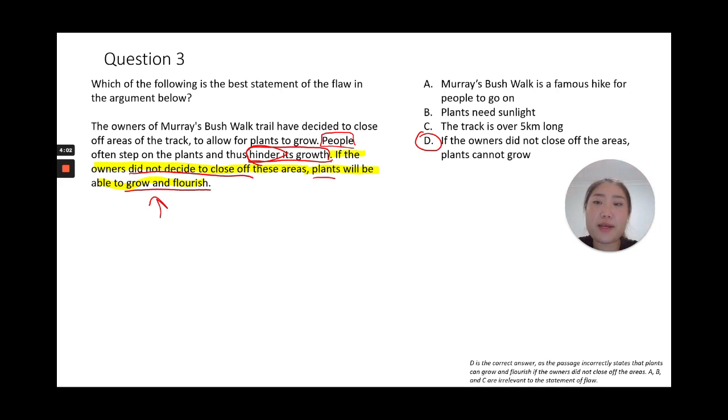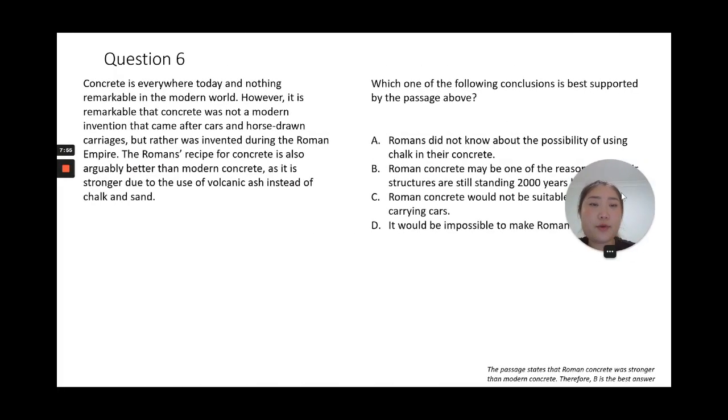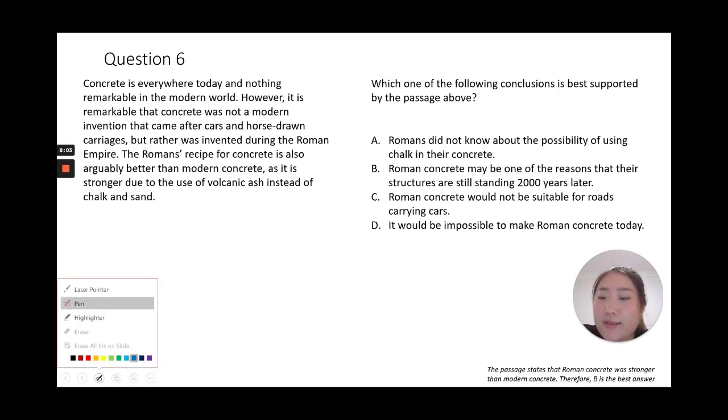Question six: which is the best supported conclusion? Where is the conclusion? Remember what I say, we want to try and look at the beginning or the end. In this case, the end is where the conclusion lies: Roman's recipe for concrete is also arguably better than modern concrete as it is stronger. That is the main conclusion here. We're talking about the history of concrete and how the Roman's recipe for concrete is actually stronger than modern concrete.